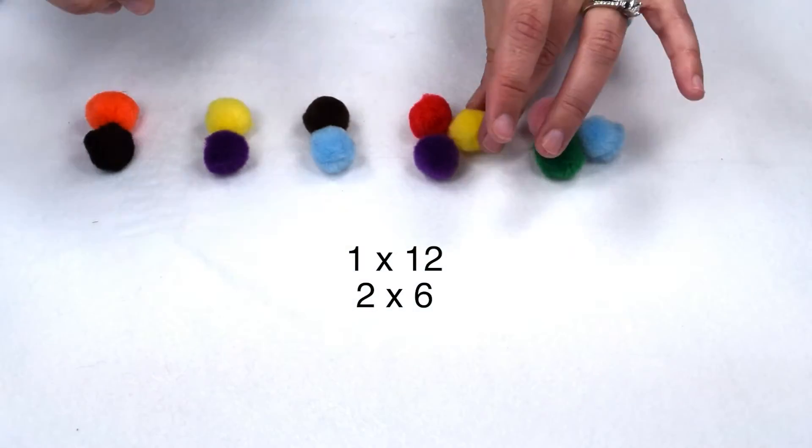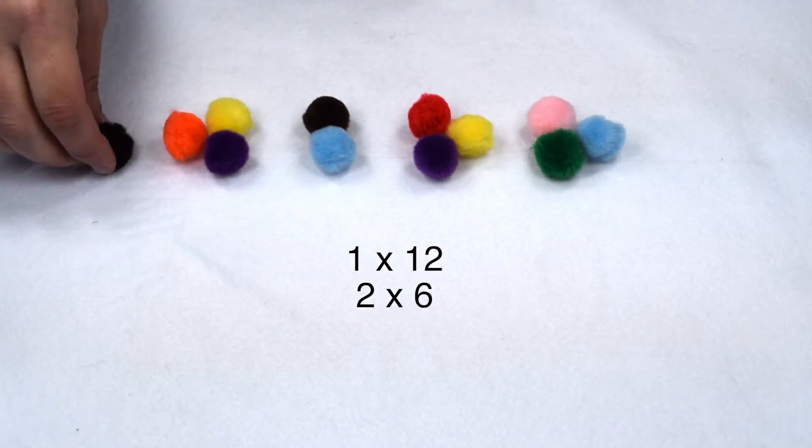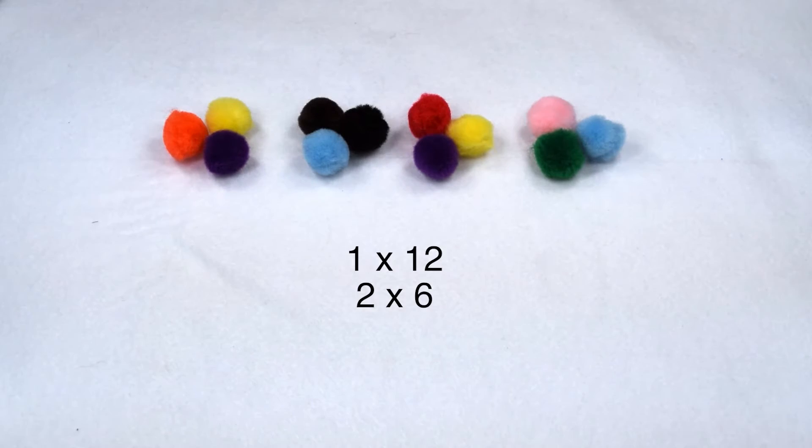Now we want to arrange it so that we have three items in each group to see if 3 is a factor pair of 12. When we do that we can make four groups. This tells us that 3 times 4 is a factor pair of 12.